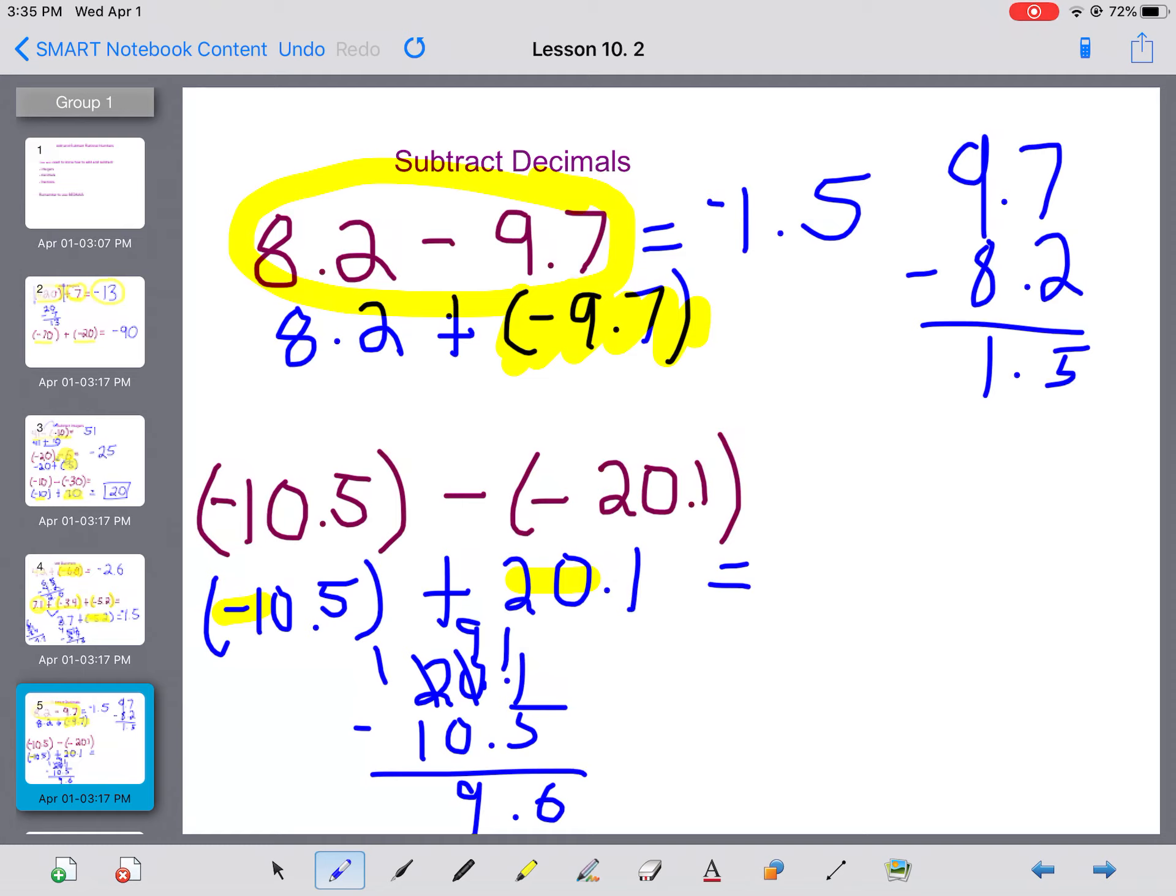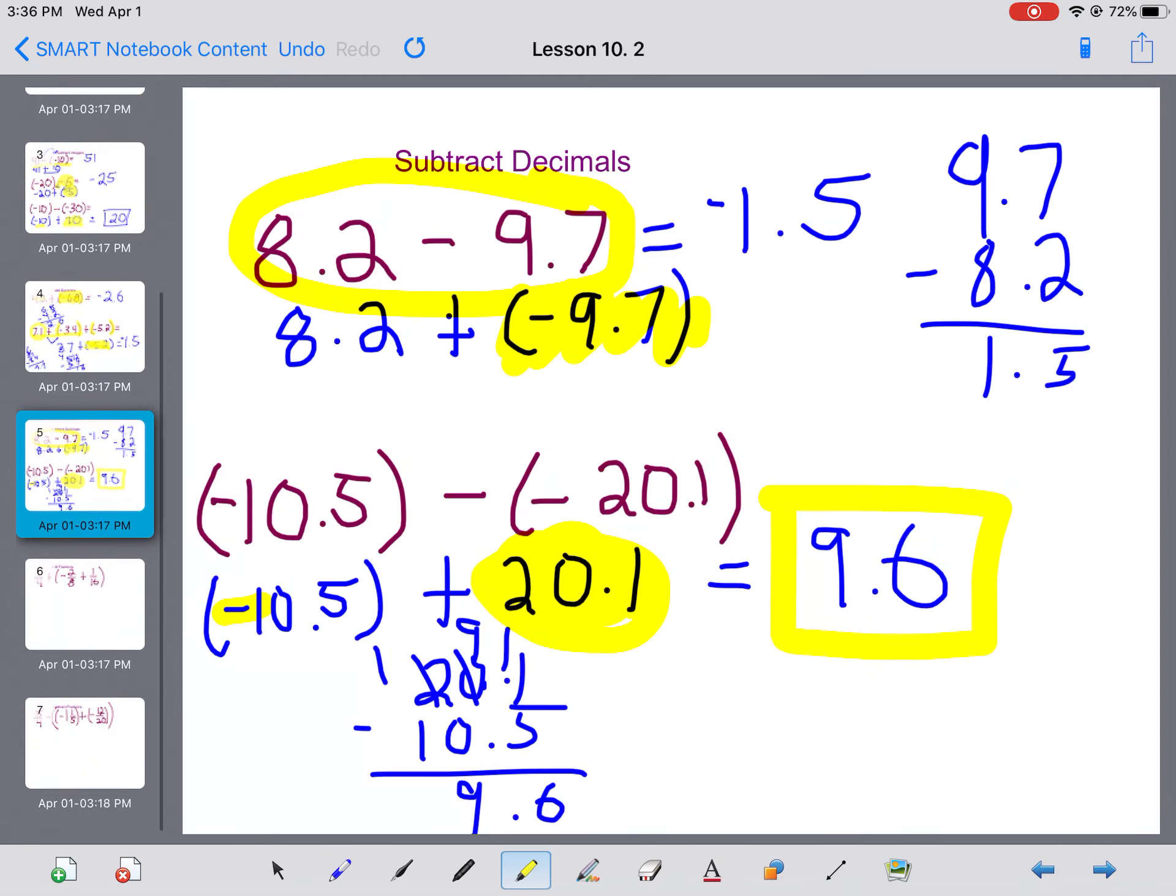9, and I get 9.6. Is it positive or is it negative? Well, my positive number had the greater absolute value. So it's going to be a positive answer.